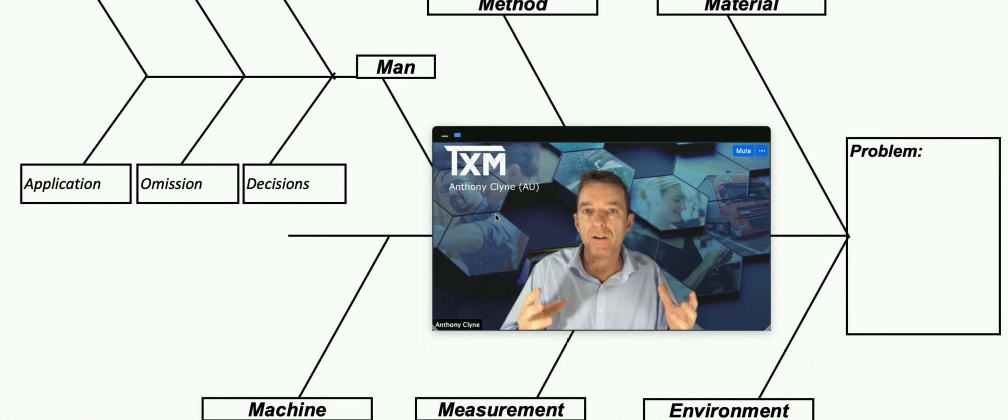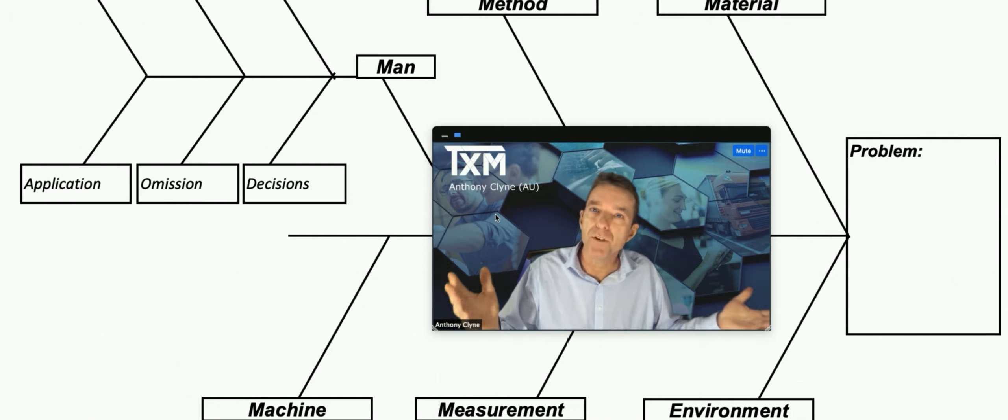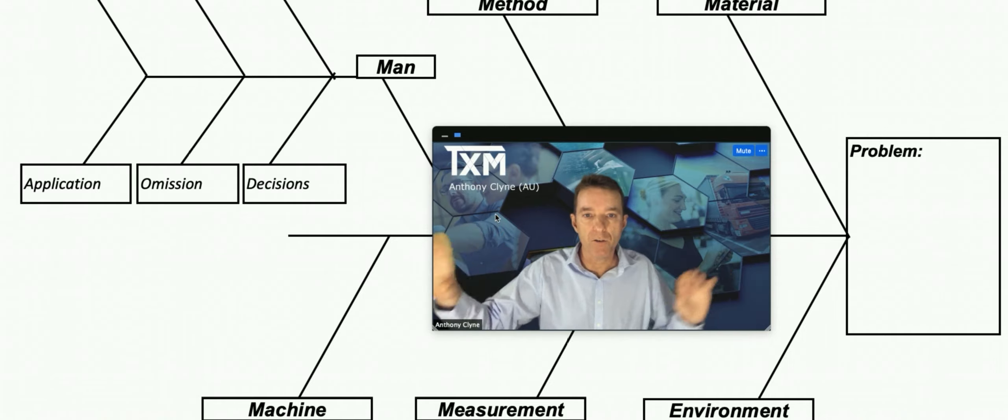After that the people then decide which of these causes is the most likely one. How at TXM we do it is we get people to either decide, but if we can't decide then we get them to vote. We have a collaborative voting system where each person gets three votes, a ten, a three, and a one, and they put it and they each select one.